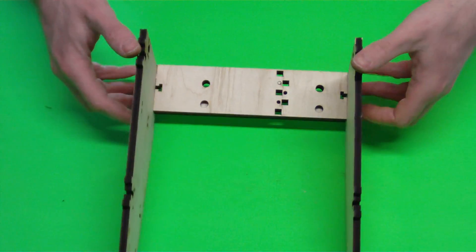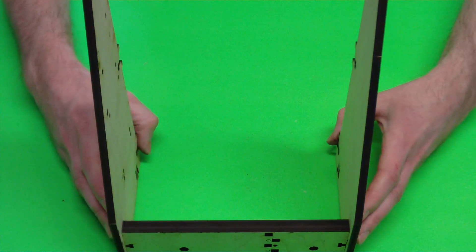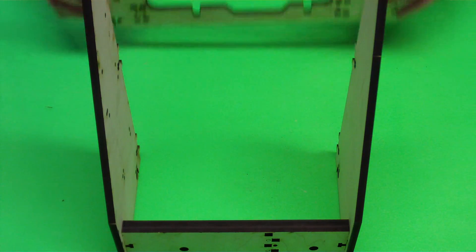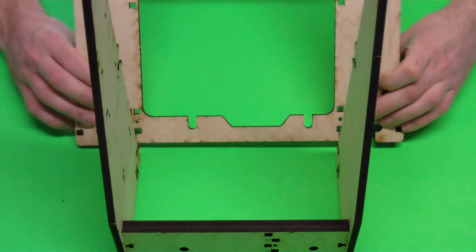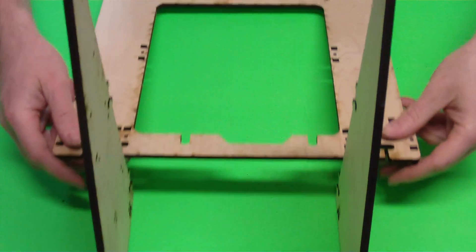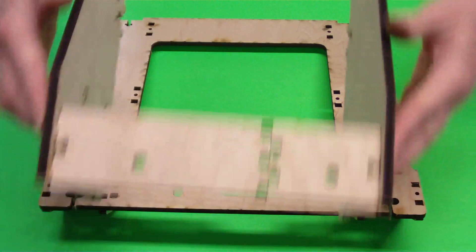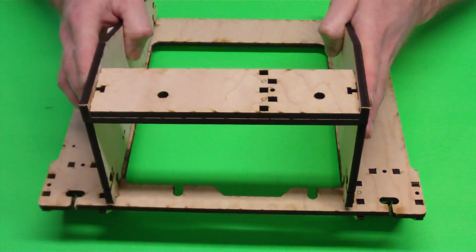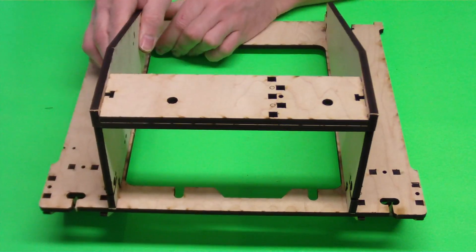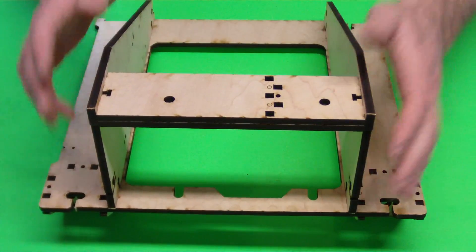Okay, so once we get those in there like that, we can stand it up. We can then get the rest of our frame that we just finished a minute ago. Then we can basically just drop it right down on top, line up the holes. It'll slot right in place.